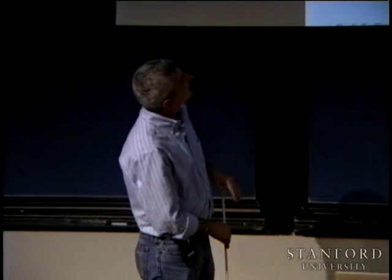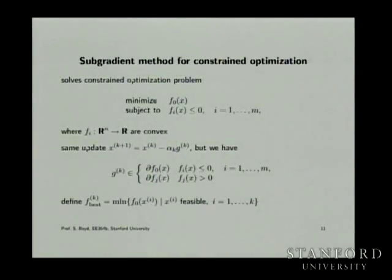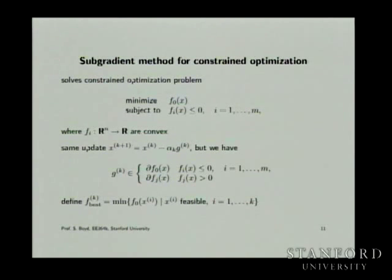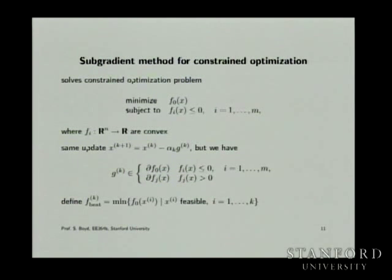Let's look at a more general case: the subgradient method for constrained optimization. Instead of describing the constraints as just a constraint set, we write them out explicitly as convex inequalities.